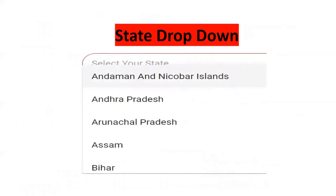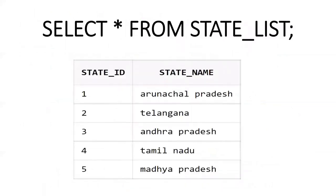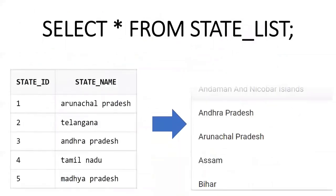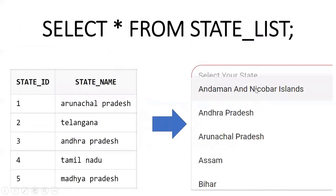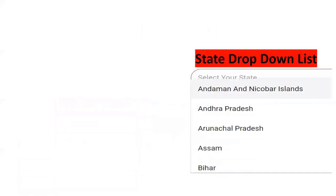Now for the first requirement - the state dropdown - I want to display the dropdown. If I select all from the state_list, I get state_id and state_name for five states. The requirement is to display the first letter of each word in uppercase. 'A' is uppercase, 'B' is uppercase - this is achieved using INITCAP. We also need sorting, so we need both INITCAP and ORDER BY.